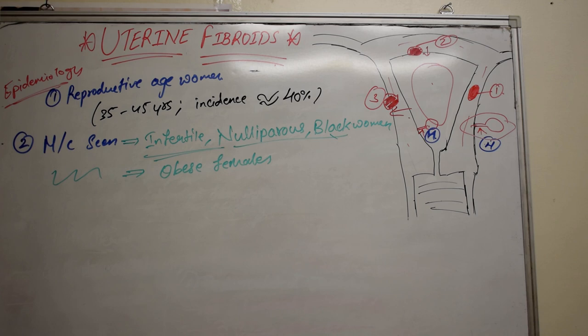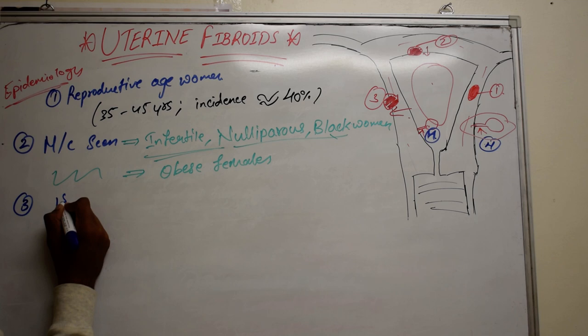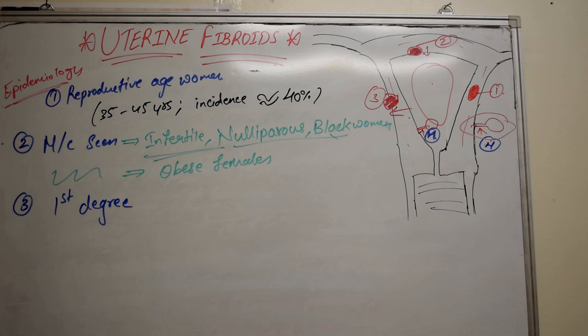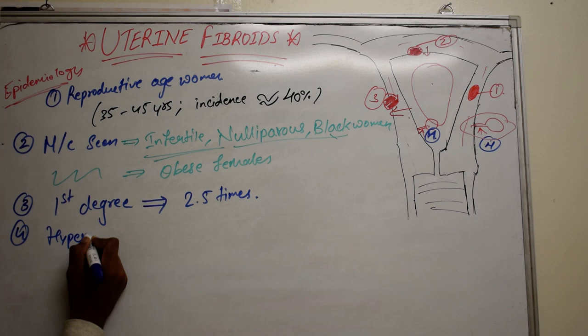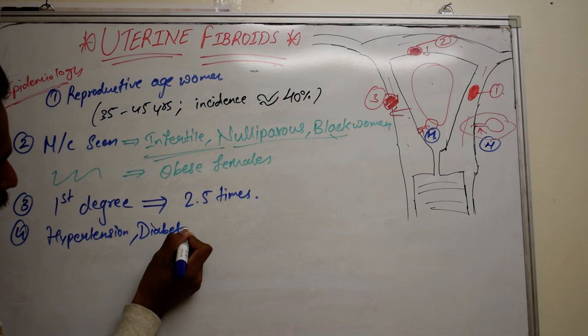If you are a first degree relative — for example, the daughter of a mother who has uterine fibroids — your chances of getting fibroids increases 2.5 times. Some systemic diseases like hypertension, diabetes, and polycystic ovarian syndrome also increase the chance of getting fibroids.